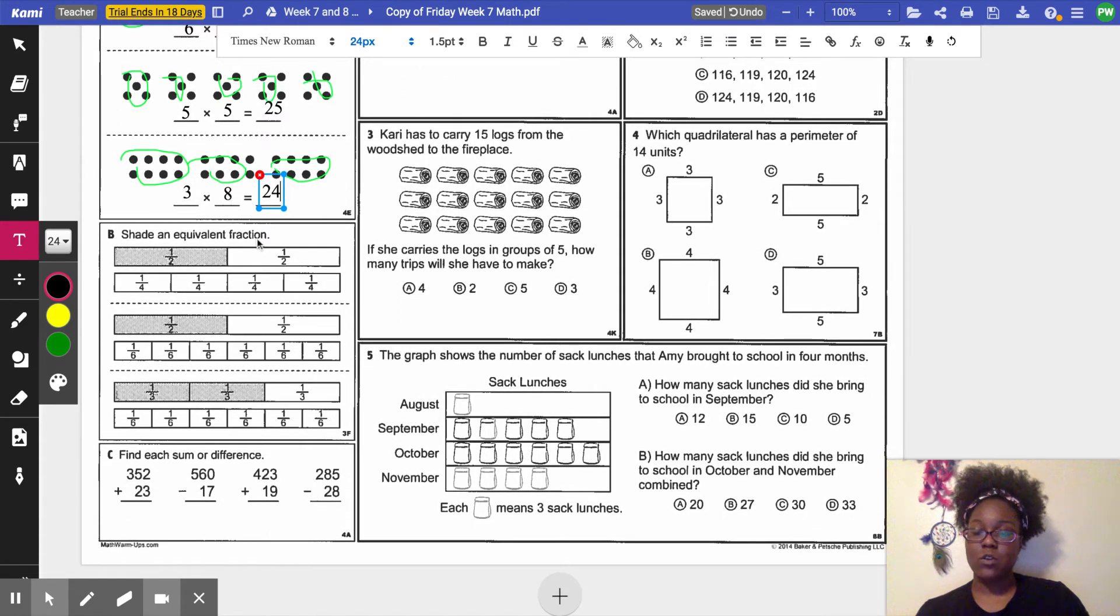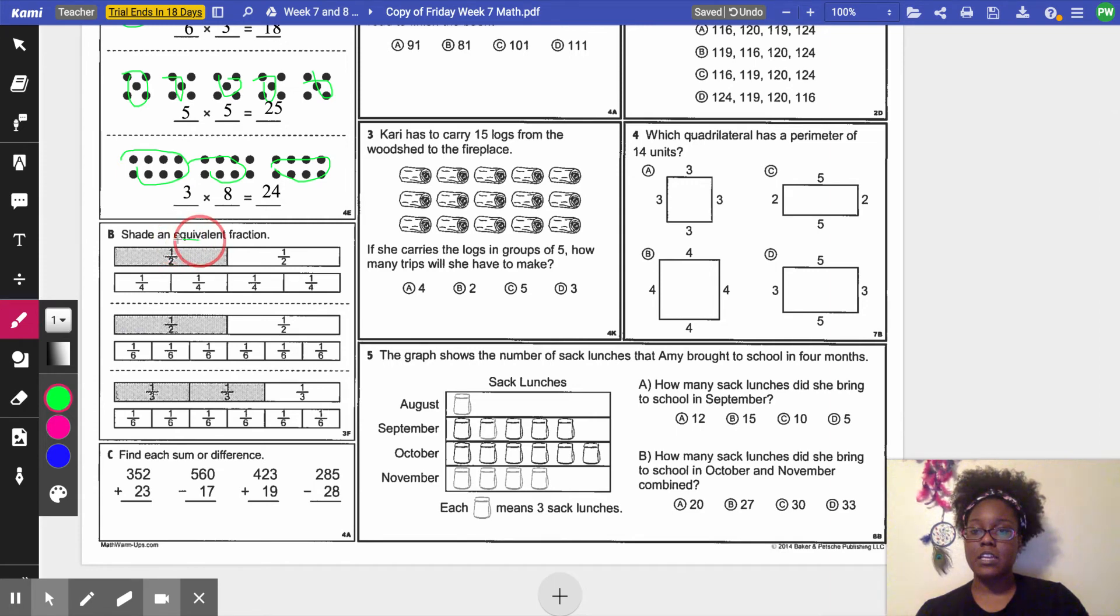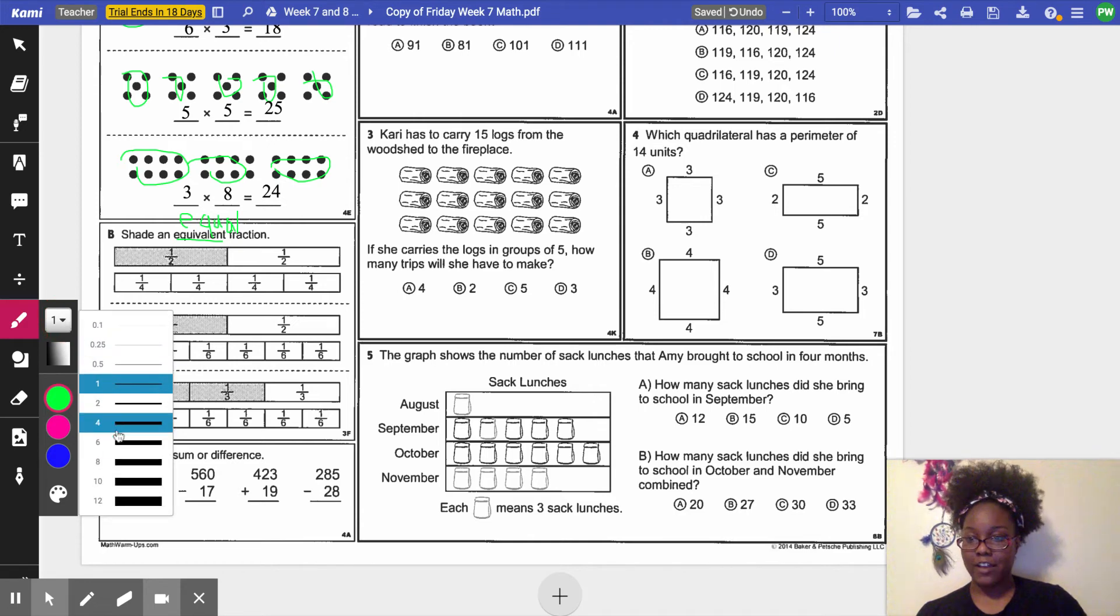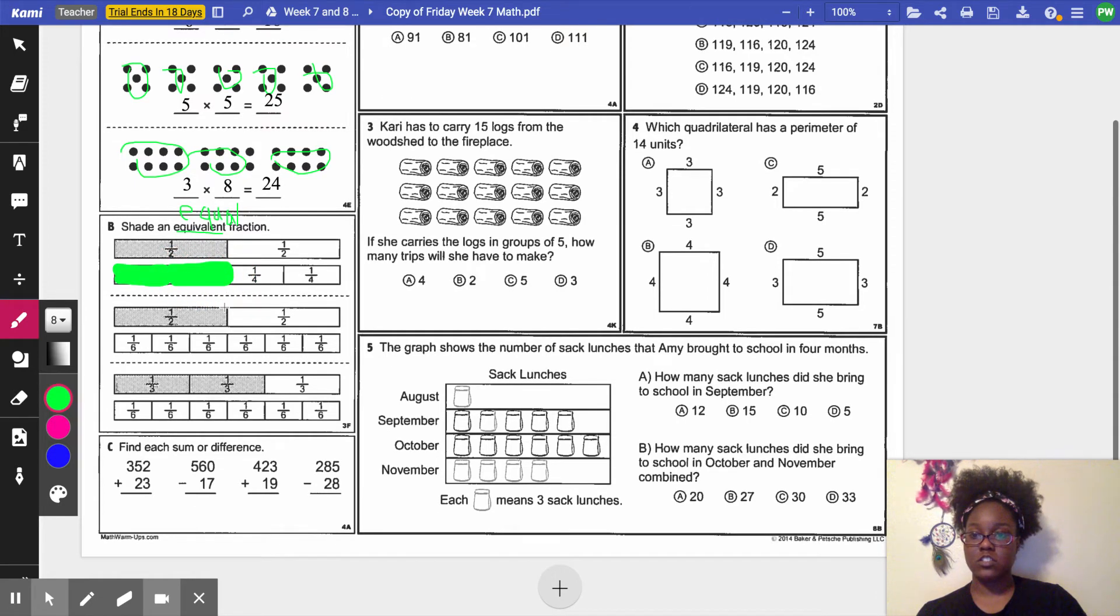Letter B, shade an equivalent fraction. Well, first of all, we need to know what equivalent means. So whenever my students see equivalent, they underline equivalent, and they write equal or they write the same. So we're looking for a fraction that is the same. If I have 1 half shaded on this one, I need to know how many fourths there are to get 1 half. So if I shade in 1 fourth, that's not enough. So I shade in another one. So I know that 1 half is equivalent to 2 fourths.